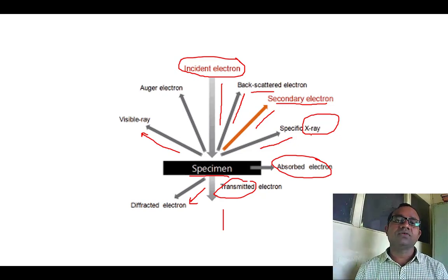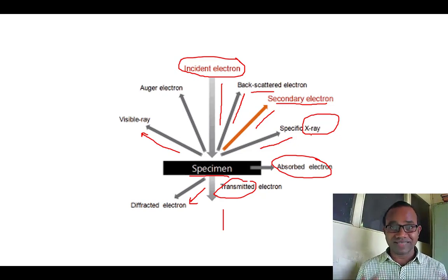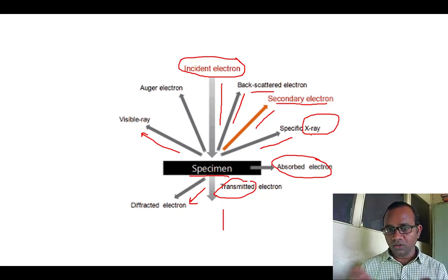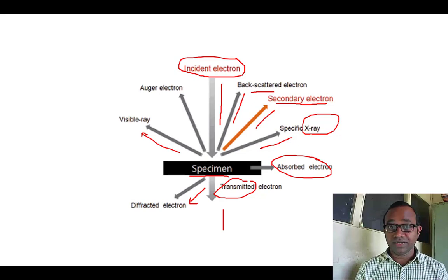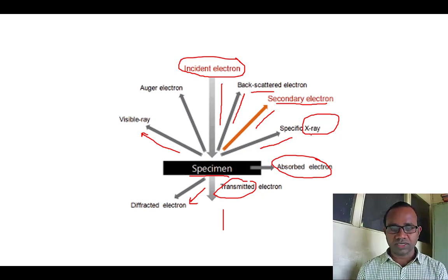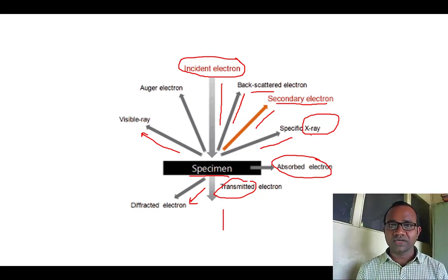Many types of electrons are produced as secondary electrons when the beam strikes the sample — some are scattered, some back-scattered, some reflected, and some are converted into x-rays. All these secondary electrons will be captured by the detector. This is exactly what happens when the electron beam strikes the sample.